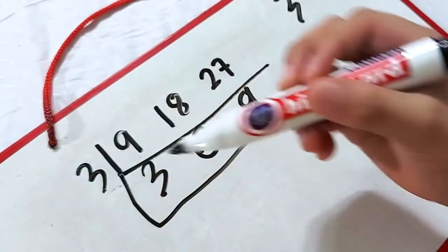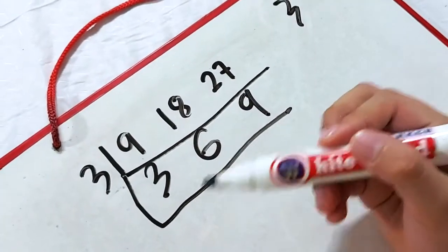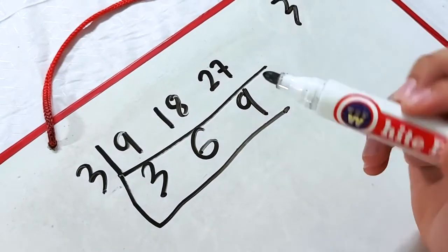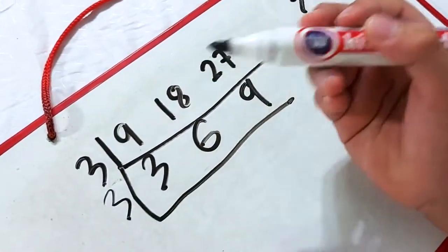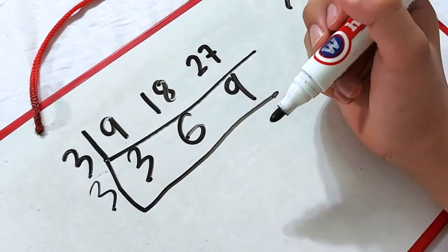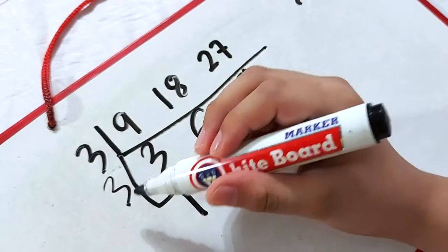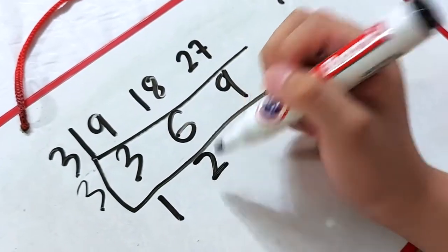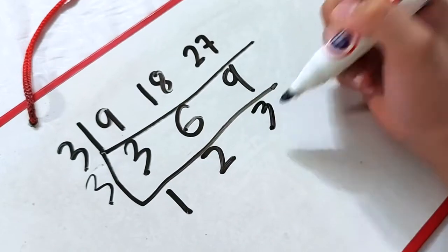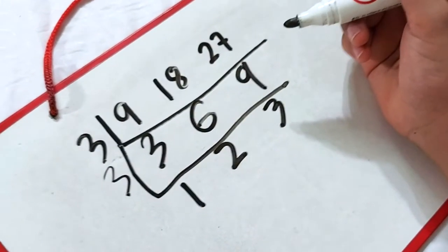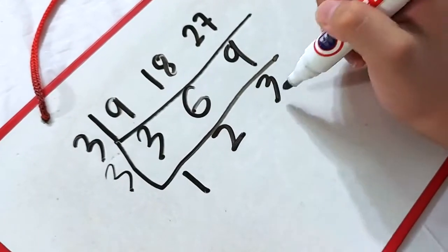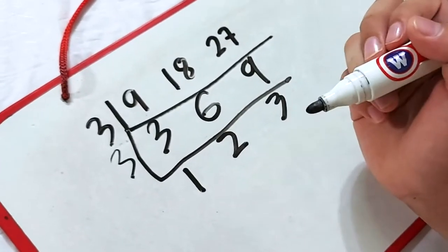Since these numbers can still be divided by a prime number, and since 3 is the lowest number here, let's use 3 as their divisor. Let's divide again. 3 divided by 3 is 1, 6 divided by 3 is 2, and 9 divided by 3 is 3. The resulting numbers are 1, 2, and 3. They are all prime numbers already, so we can stop now.